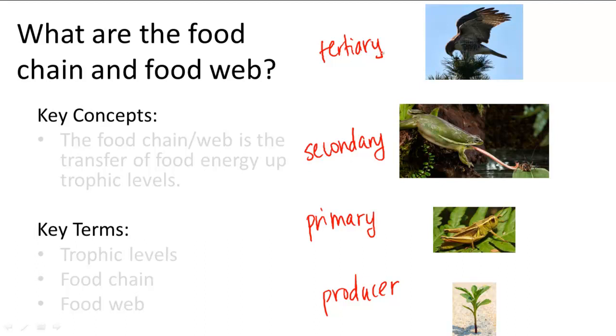So all the different levels of producers and consumers are called trophic levels. And a linear representation of this would be the food chain.